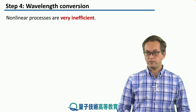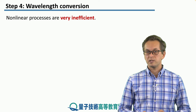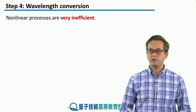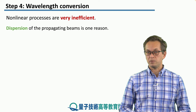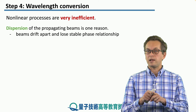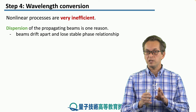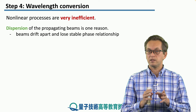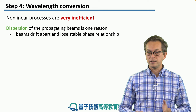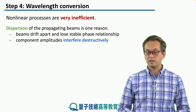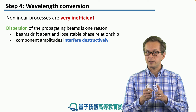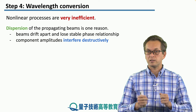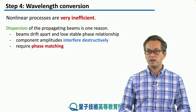It looks like we are done with wavelength conversion, but this is not quite the case yet. That's because these nonlinear processes are very inefficient, and this is due to the dispersion of the propagating beams. As the beams propagate through the chi2 crystal, the beams drift apart and lose their stable phase relationship. When this happens, destructive interference kicks in, and whatever field we are producing is effectively cancelled out. So somehow we have to ensure that the two propagating beams maintain a stable relationship — this is known as phase matching.